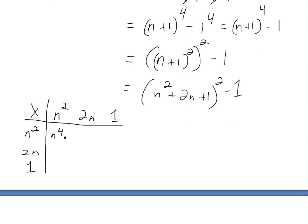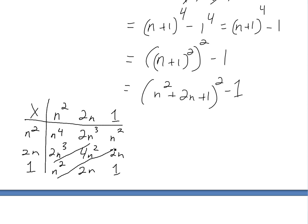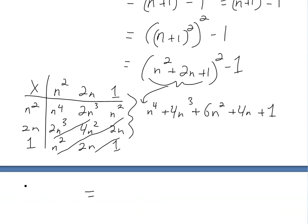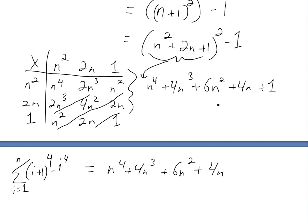This is going to be n to the 4. This times this one is going to be 2n cubed, this is n squared, and this and this is going to be 2n cubed, this is n squared, this is going to be 2n, this is 4n squared, and this last one is 1. Then you just add them up on the diagonals, because diagonals are the same power. You're going to get n to the 4, plus 4n cubed, plus 6n squared, then plus 4n, and then plus 1. So that's what (n plus 1) to the power of 4 equals. But then you have to subtract 1, so the telescoping sum equals n to the 4 plus 4n cubed plus 6n squared plus 4n — the 1s cancel.